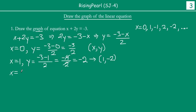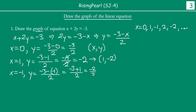Now we take x = −1: y = (−3 − (−1)) / 2 = (−3 + 1) / 2 = −2 / 2 = −1. So this gives us: x = −1, y = −1.